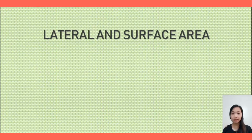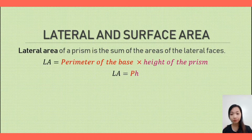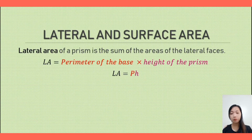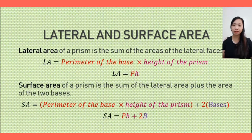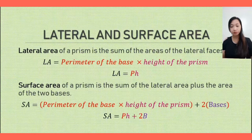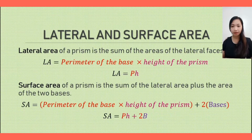Now let's talk about the lateral area and surface area of a prism. The lateral area is the sum of the areas of the lateral faces, which equals the perimeter of the base multiplied by the height of the prism. In symbols, the lateral area is equal to pH. The surface area is the total area of a prism — it is the sum of the lateral area plus the area of the two bases. In symbols, the surface area equals pH plus 2B, where p is the perimeter of the base, h is the height, and B is the area of the base.